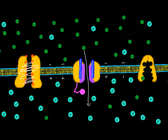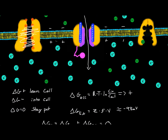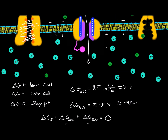The sodium channel, when it's open, makes the cell have a positive voltage. It actually levels out at around positive 30 millivolts when the sodium channels are all open. So now instead of dealing with potassium, we're dealing with sodium — these all become sodium now — and we consider the electrical gradient of sodium.